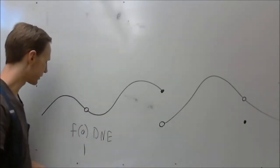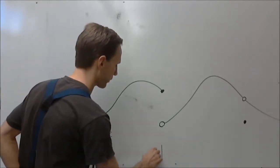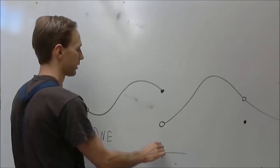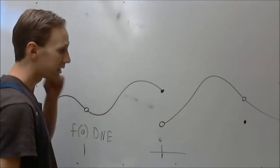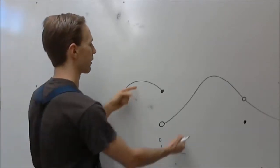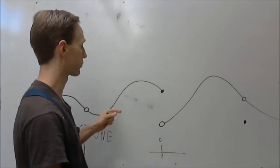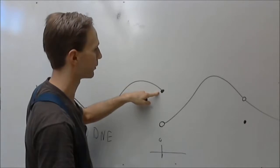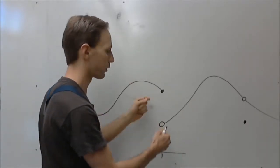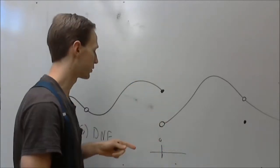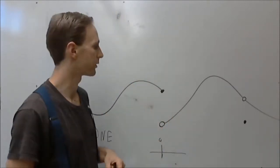The second discontinuity still requires lifting your pencil. What makes it so? Well, f of a exists — there is a point there — but it's a discontinuous function because the limit does not exist as x approaches a. The limit from the left equals one y value, the limit from the right equals a different y value. Since those aren't the same number, the limit as x approaches a does not exist, and that destroys continuity.